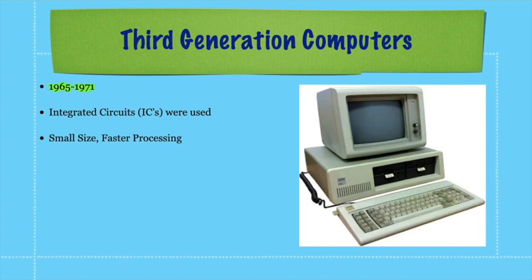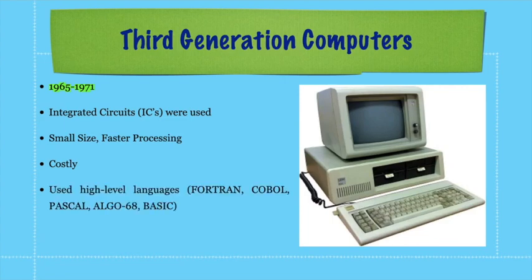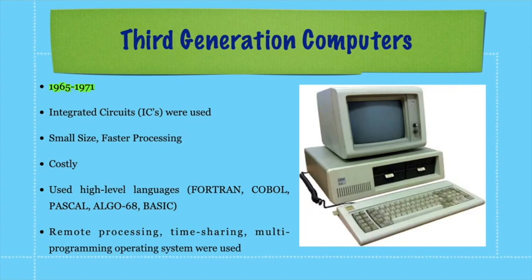A question can be asked: where were integrated circuits used? — In third generation computers. These third generation computers were costly but small in size. They used high-level languages like FORTRAN, COBOL, PASCAL, ALGOL, and BASIC — similar to modern languages like Java, C++, and Python. Operating systems featuring remote processing, time sharing, and multi-programming were introduced with third generation computers.